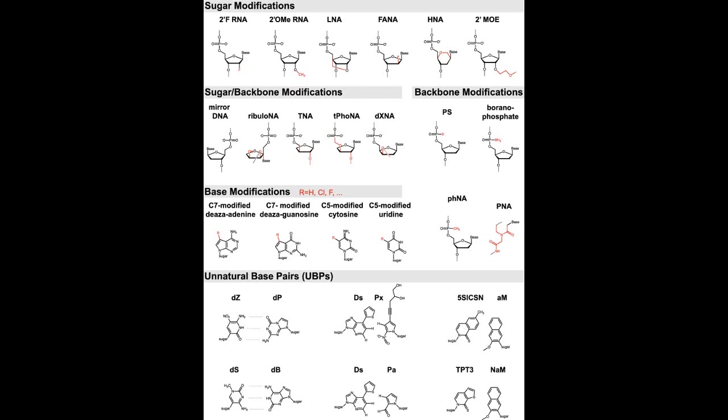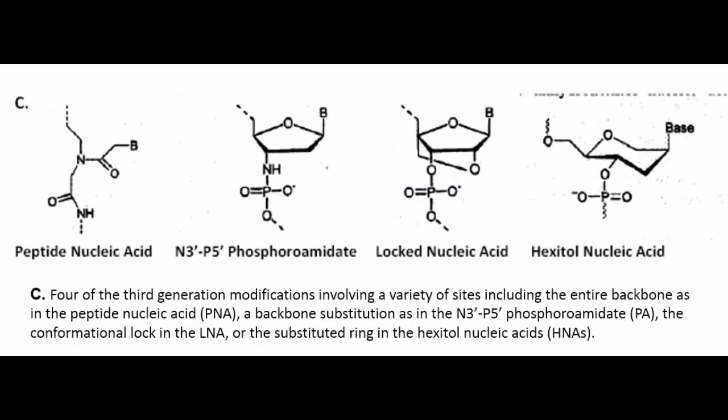A variety of nucleic acid analogues have been developed that display increased thermal stabilities when hybridized with complementary DNAs or RNAs as compared to unmodified DNA-DNA and DNA-RNA duplexes. These are the third generation antisense oligonucleotide modifications.